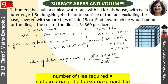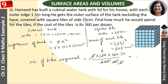Solving this: 150 divided by 25 gives 6, and 150 divided by 5 gives 30. So the number of tiles is 6 × 30, which means 180 tiles are needed in total.